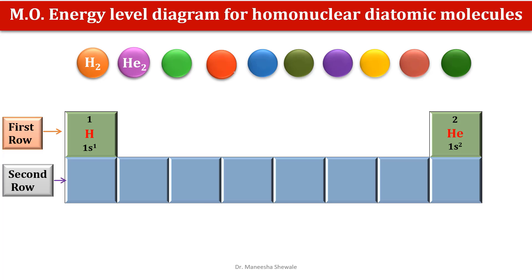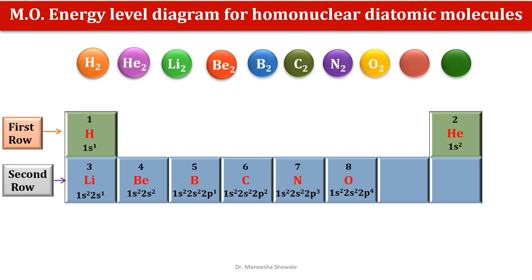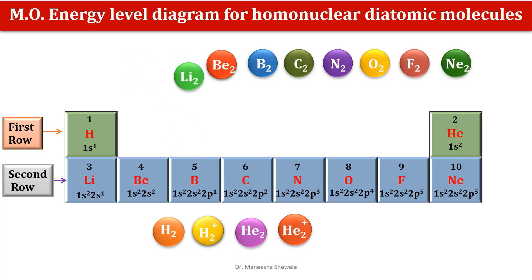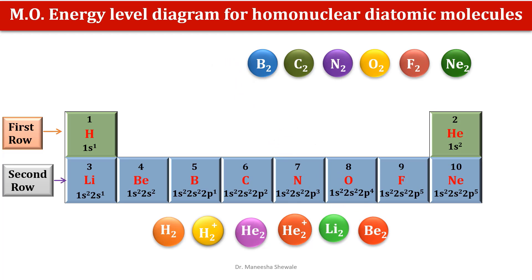This will be followed by the second row elements: lithium, beryllium, boron, carbon, nitrogen, oxygen, chlorine, and neon. In this video we will begin with the hydrogen molecule, then the H₂⁺ ion, the helium molecule, the helium molecule ion, then the lithium and beryllium molecules.